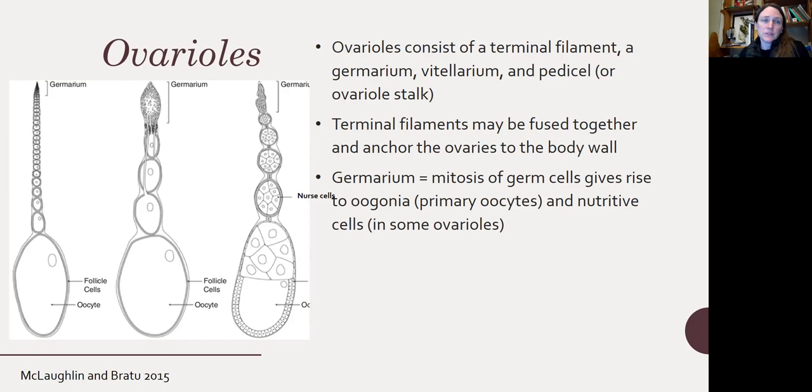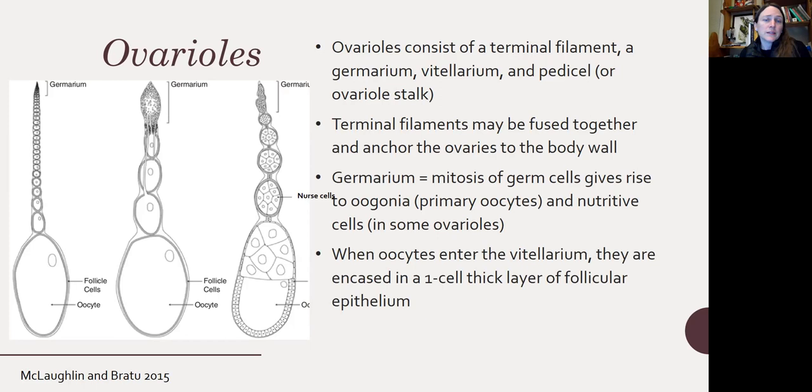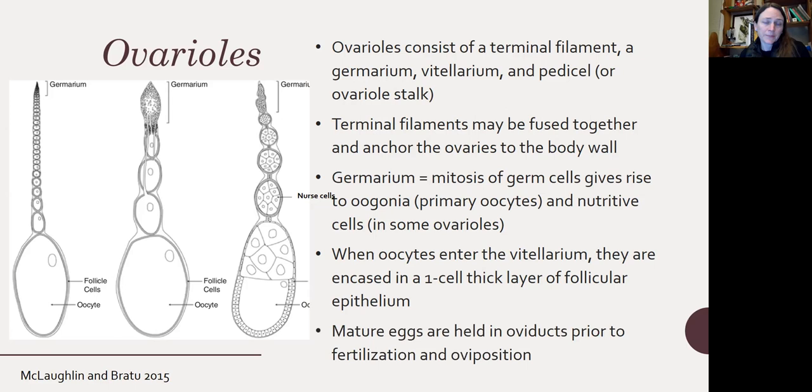In the germarium, mitosis of germ cells gives rise to oogonia, the primary oocytes, and nutritive cells in some ovaries. When the oocytes enter the vitellarium — which comes after the germarium — they're then encased in a one-cell-thick layer of follicular epithelium. Mature eggs are held in the oviducts prior to fertilization and oviposition.